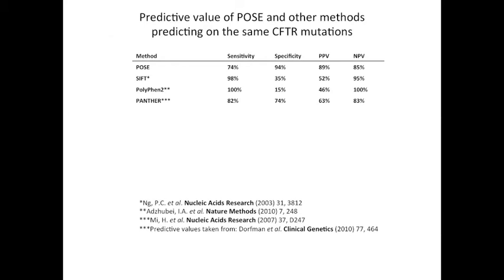Next we wanted to see if the increased performance achieved by our method came from the sequence optimization or the new score function. So we used our score function but on multiple sequence alignments that didn't arise from optimization. Using CFTR orthologs only, our scoring function got good sensitivity but pretty low specificity.